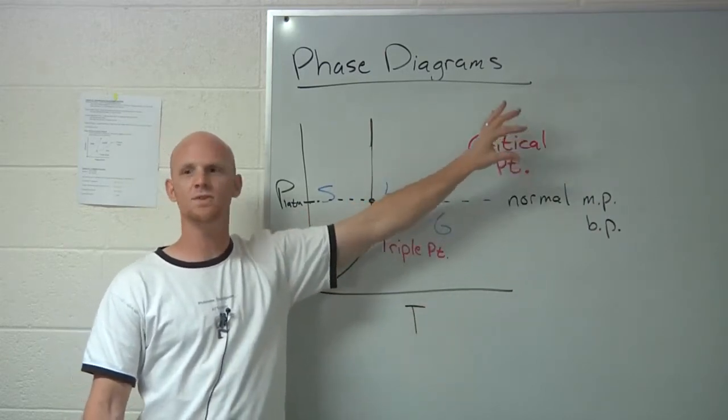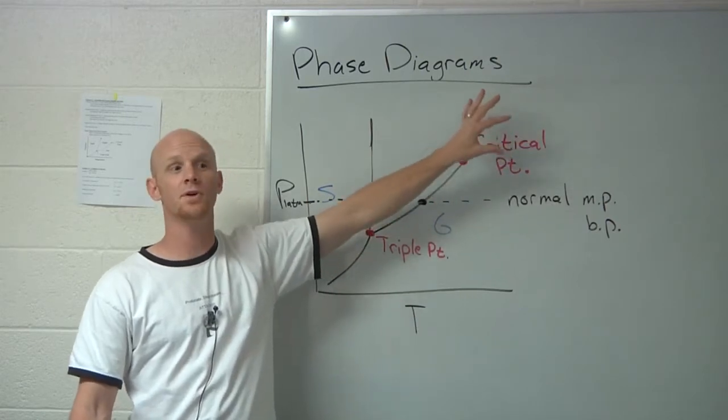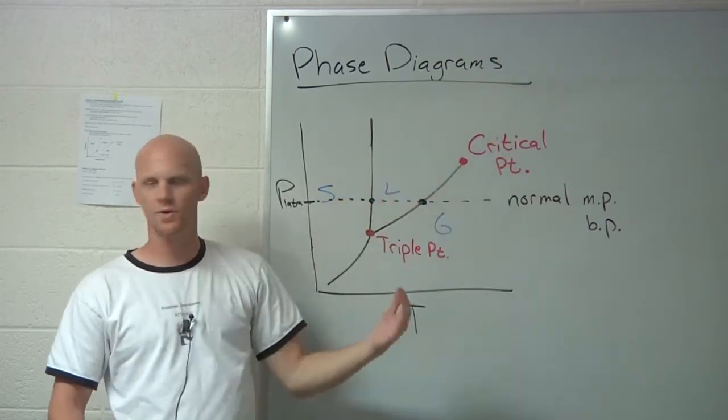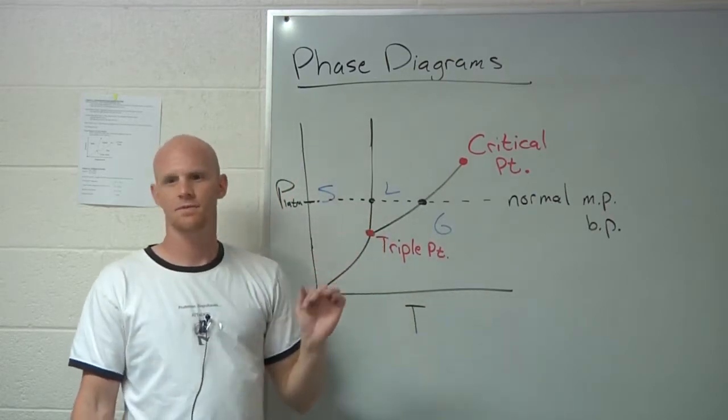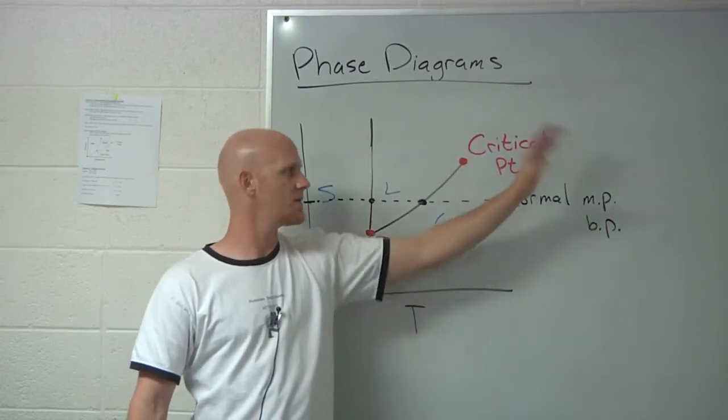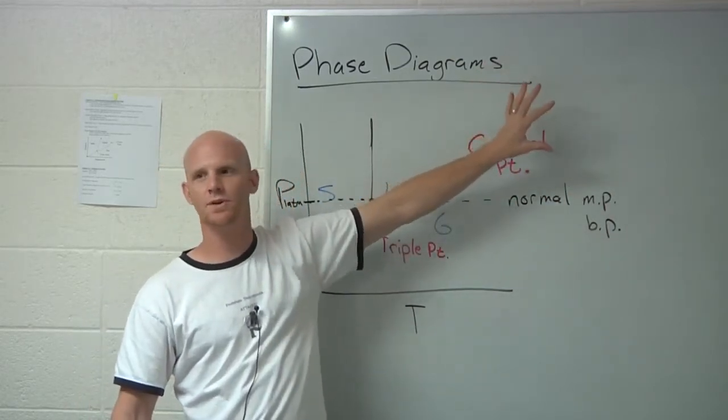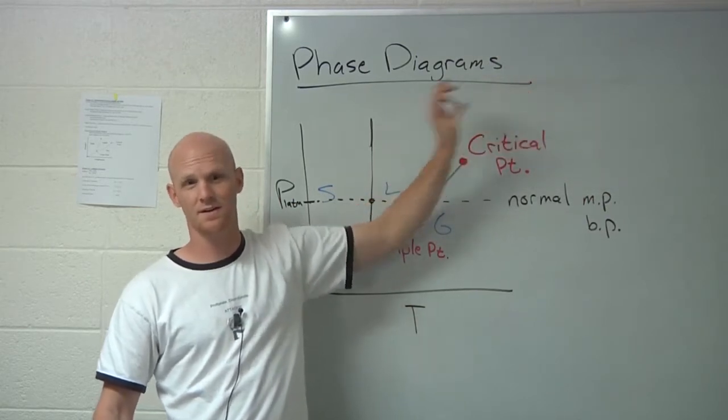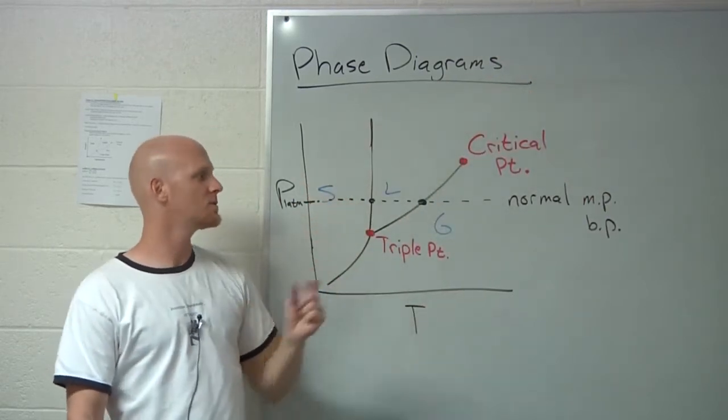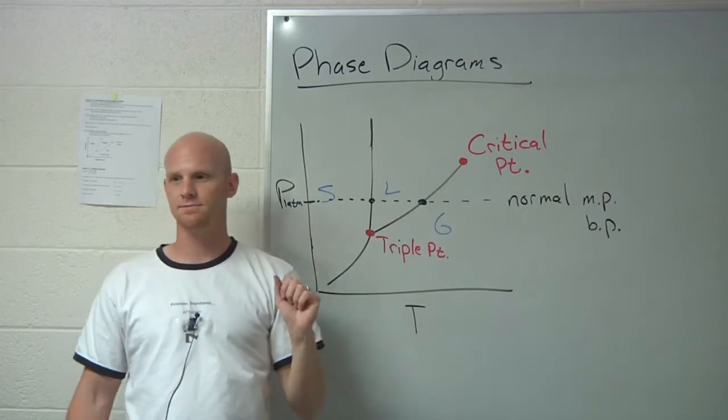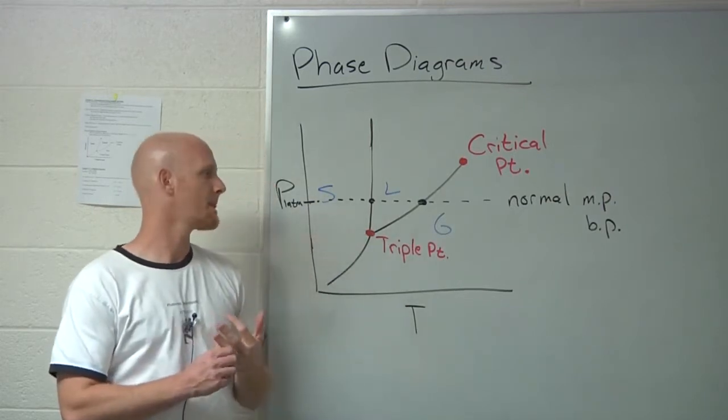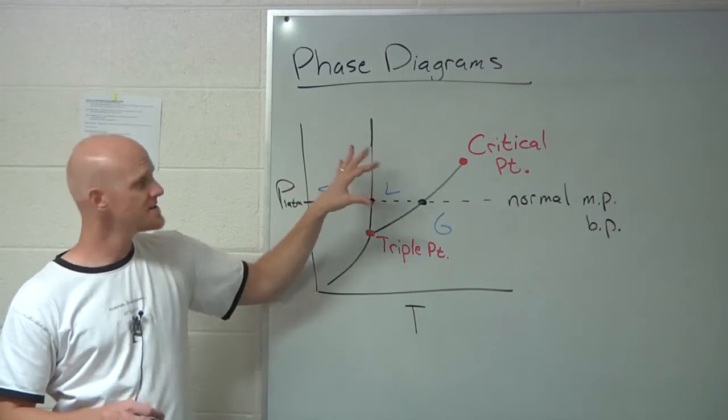The critical point is the point beyond which you don't really have a gas or a liquid phase change anymore. We usually don't even call it a gas or liquid out here, we just call it a fluid or a supercritical fluid - meaning beyond the critical point, either higher in temperature or higher pressure, just a supercritical fluid. There's no transition between liquid and gas beyond that point.